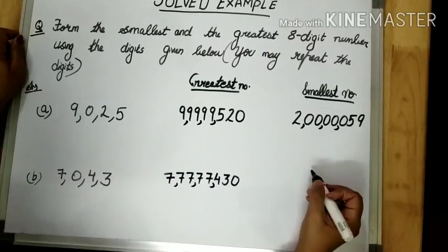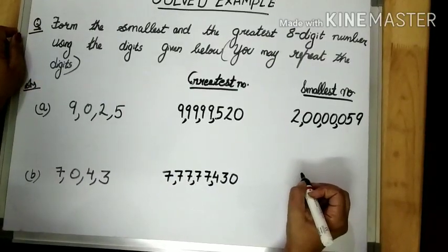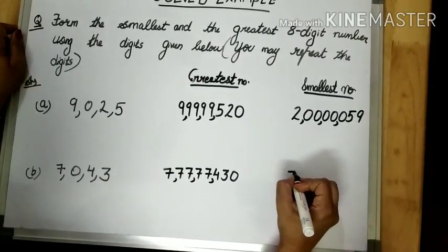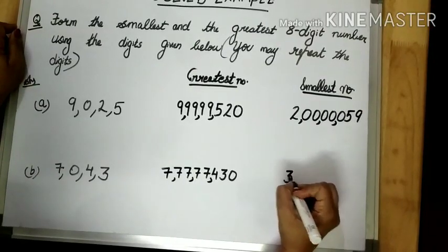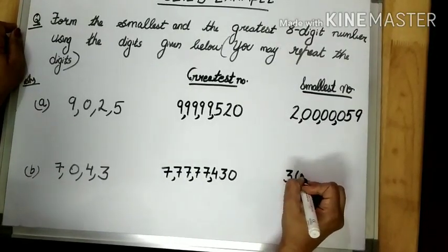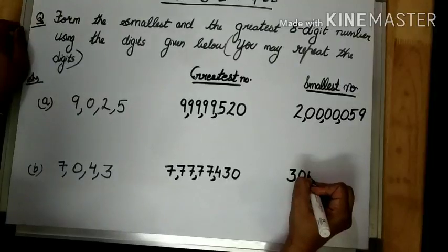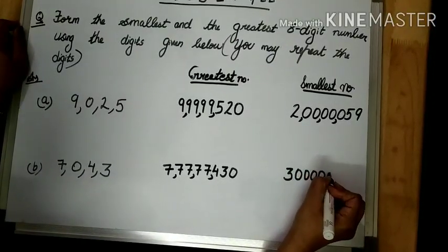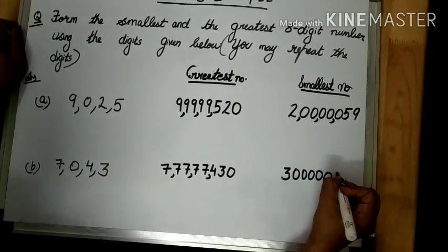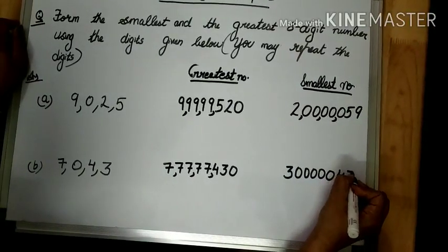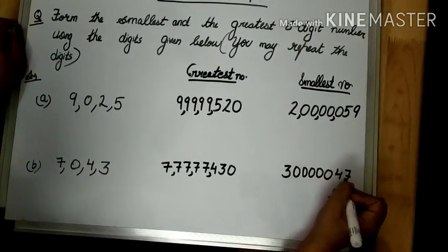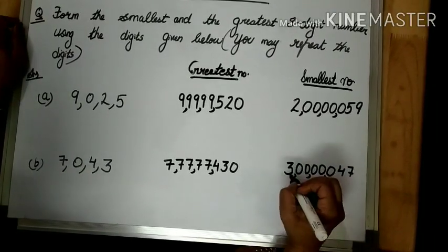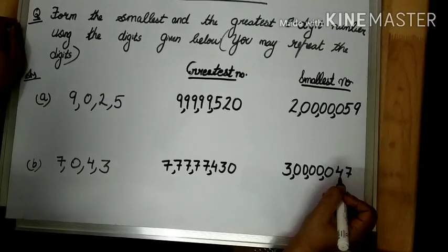Now, in order to form the smallest number, we know that we have to put 0 in the second highest place. So we will start with 3, put 0 in the second highest place, and repeat it 5 times — 1, 2, 3, 4, 5. The leftover digits are 4 and 7. Does it form an 8-digit number? Now, insert the commas. The number formed is 3 crore and 47.